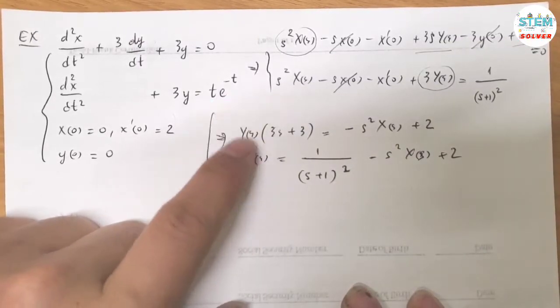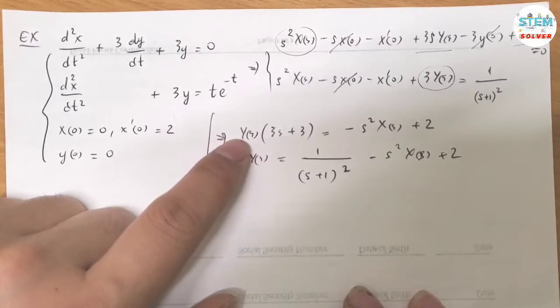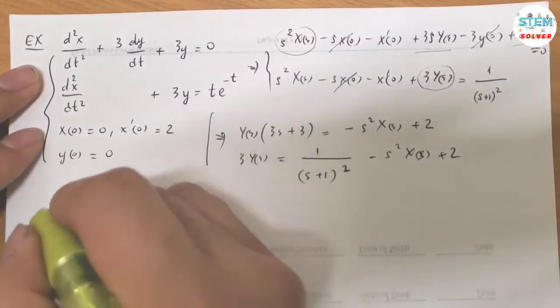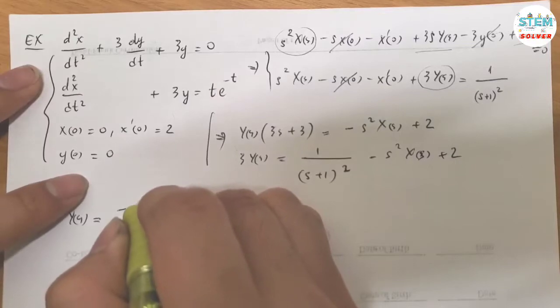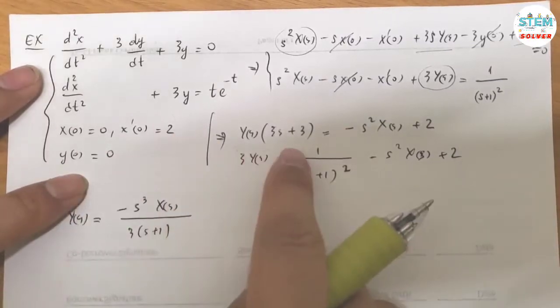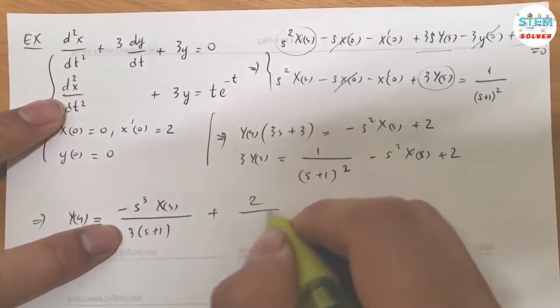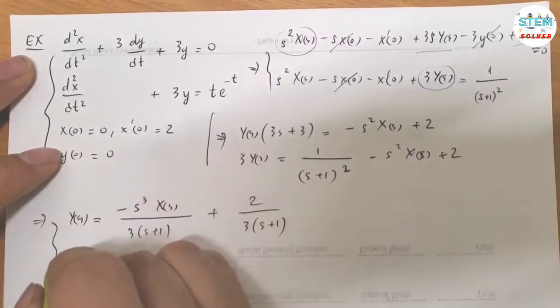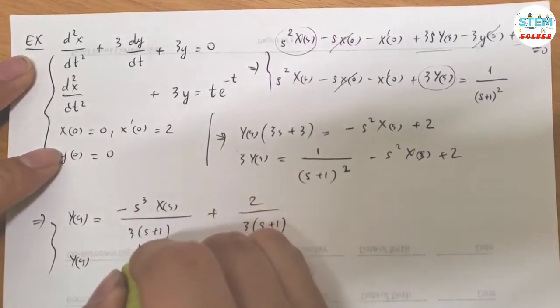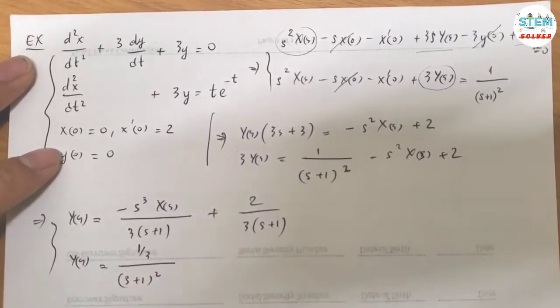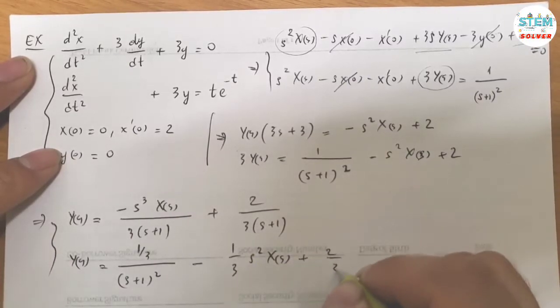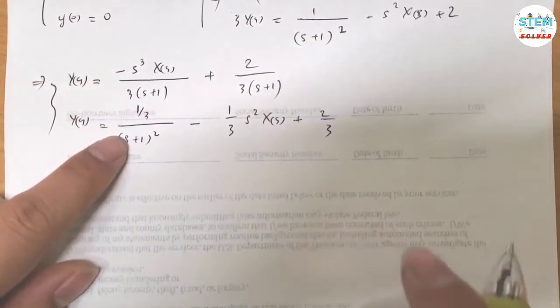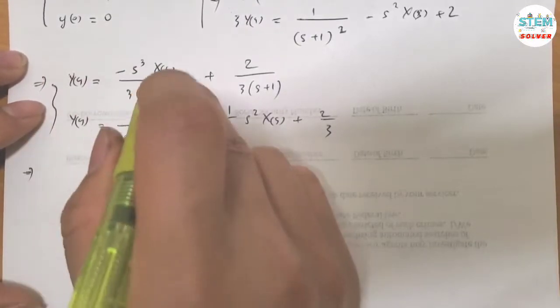Now the variable isolate for the first equation. Get rid of everything and leave capital Y of S. So I have negative S cubed X of S over 3 times S plus 1. And so I factor it down the 3 plus 2 over 3 S plus 1. For the bottom equation, divide both sides by 3. So I have 1 third over S plus 1 squared minus 1 third S squared X of S plus 2 third. Now Y of S equal to this and equal to this. So set these equations equal to each other and solve for capital X of S.